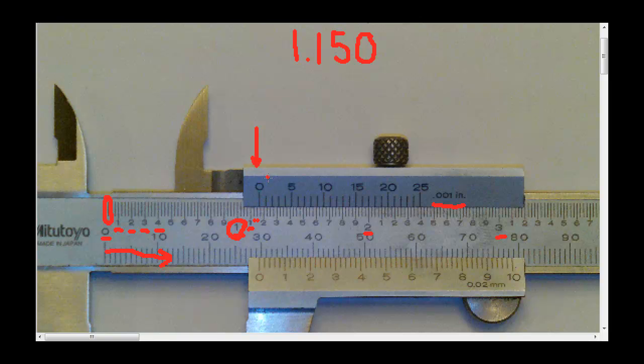Now, how these things are read after that is after we get between those two graduations, we now move up to the movable scale. And we just move our eye down until we see a line that lines up with the main scale.